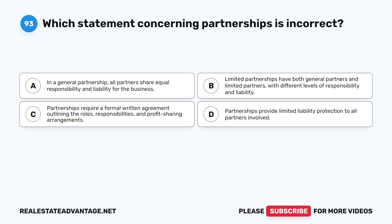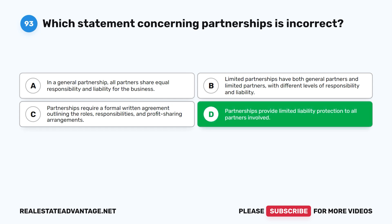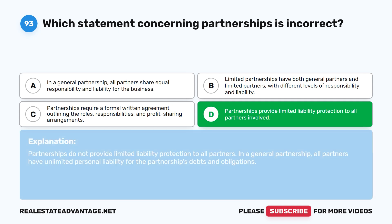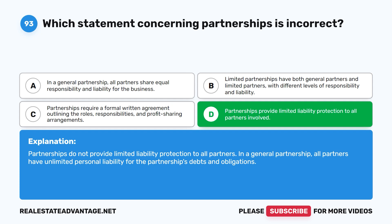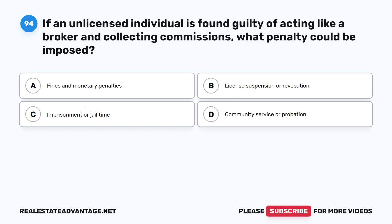Question 93: Which statement concerning partnerships is incorrect? A. In a general partnership, all partners share equal responsibility and liability for the business. B. Limited partnerships have both general partners and limited partners with different levels of responsibility and liability. C. Partnerships require a formal written agreement outlining the roles, responsibilities, and profit-sharing arrangements. D. Partnerships provide limited liability protection to all partners involved. The correct answer is D — this is incorrect. Partnerships do not provide limited liability protection to all partners. In a general partnership, all partners have unlimited personal liability for the partnership's debts and obligations.